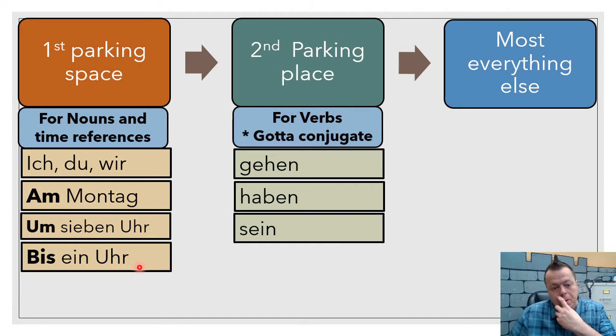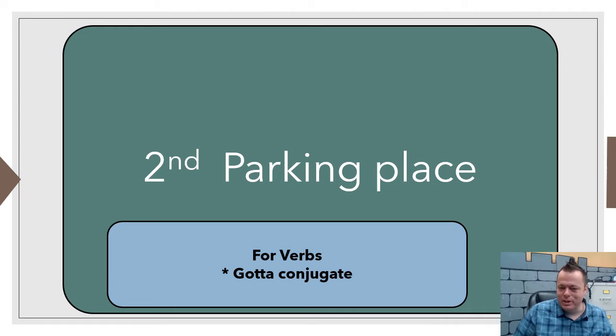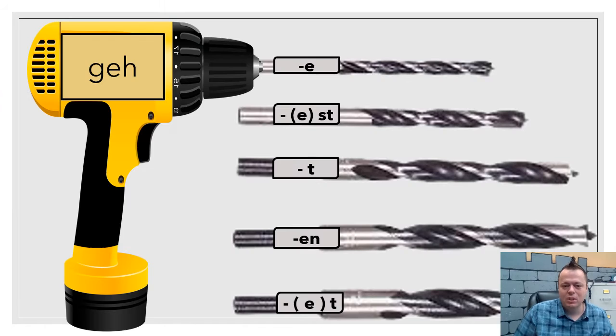The second parking place is for conjugated verbs. We've got to conjugate these guys. How do we do that? Welcome to second parking place for verbs that conjugate. One thing to keep in mind is there are a couple of things here. We have the drill here, and this is just kind of an example of a metaphor.